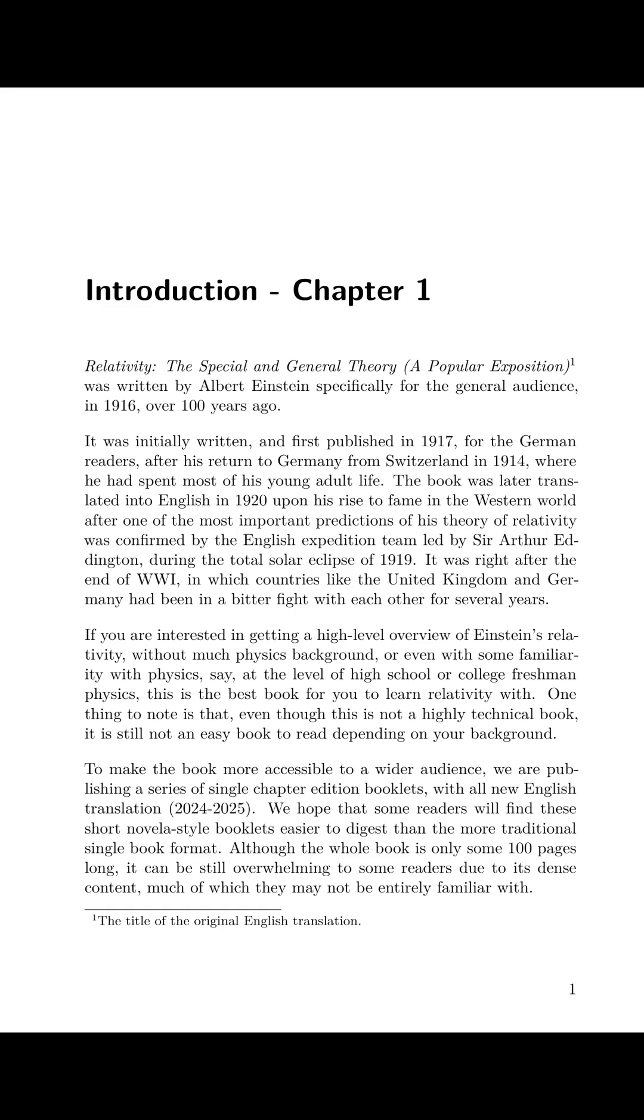It was initially written and first published in 1917 for the German readers after his return to Germany from Switzerland in 1914, where he had spent most of his young adult life. The book was later translated into English in 1920, upon his rise to fame in the Western world, after one of the most important predictions of his theory of relativity was confirmed by the English expedition team led by Sir Arthur Eddington during the total solar eclipse of 1919. It was right after the end of World War I, in which countries like the United Kingdom and Germany had been in a bitter fight with each other for several years.